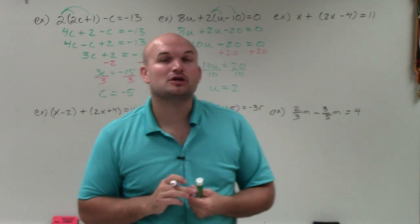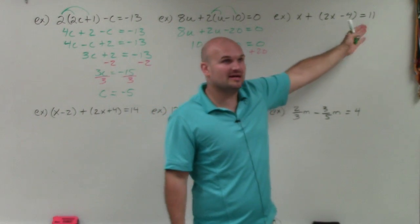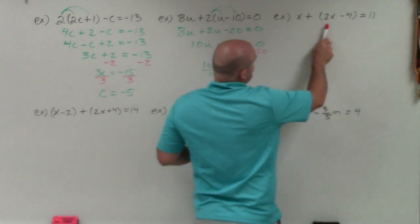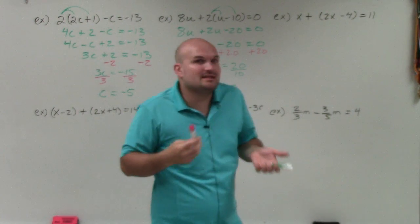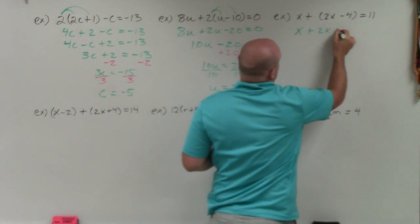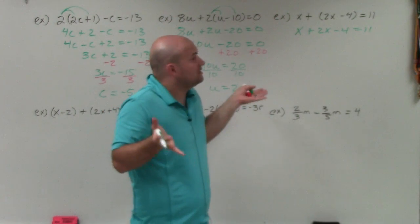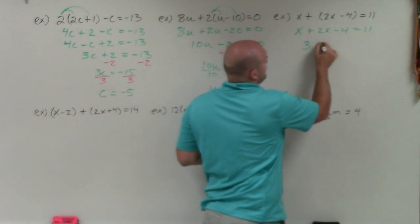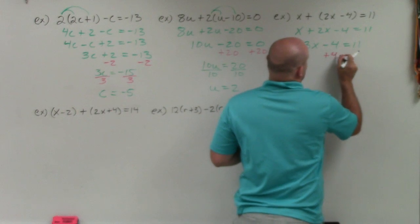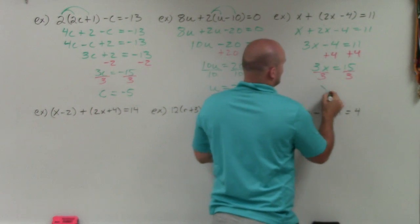Now it gets confusing when we include parentheses but there's no operation applied to them. In this next example, the parentheses are just grouping — not being multiplied by anything other than 1. We don't need the parentheses, so I can rewrite this as x plus 2x minus 4 equals 11. Combining x plus 2x gives 3x minus 4 equals 11. To undo subtraction by 4, I add 4, getting 3x equals 15. Divide by 3 on both sides: x equals 5.